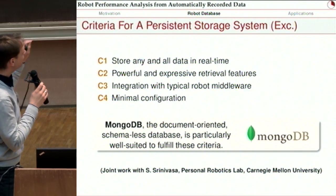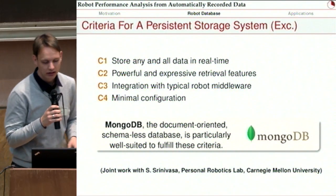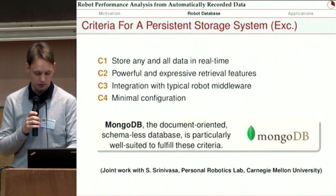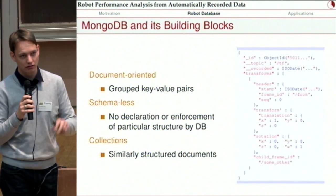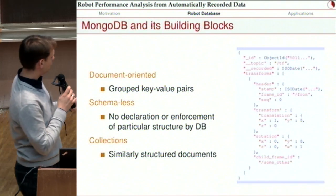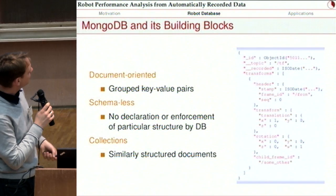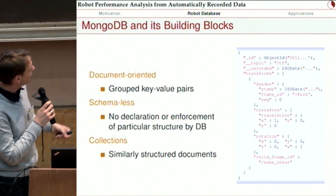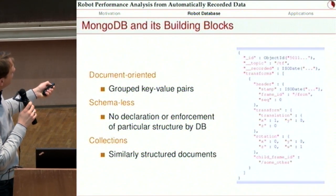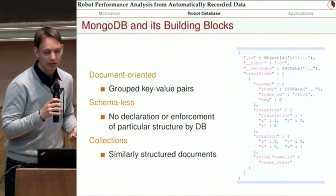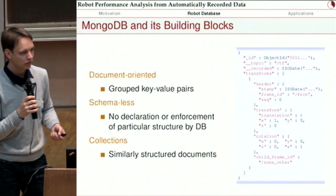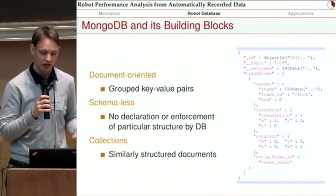We determined that MongoDB is a suitable candidate for doing this — it's a document-oriented, schema-less database, and this was joint work with Sitzran Divasa from CMU. Document-oriented means that unlike SQL-based databases, we have grouped key-value pairs. On the right side you see an example document with keys in red and the data stored in those keys, all embraced JSON-like in curly brackets — that's one document. It's schema-less, so there's no declaration or enforcement of a particular structure by the database. That sounds like chaos and havoc, but it's not — it's very useful in particular for robot applications.